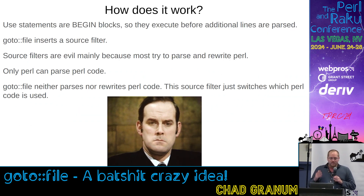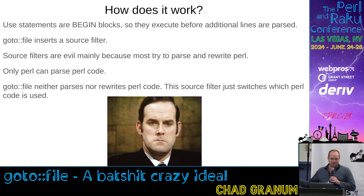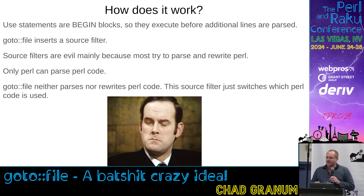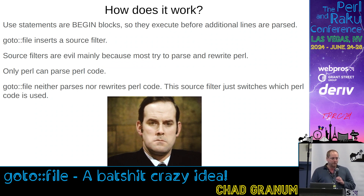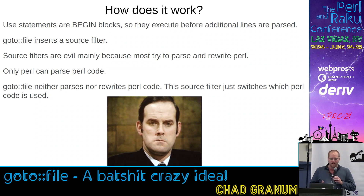So, how does it work? Well, there's a few things you need to know about. You need to know that use statements are essentially begin blocks. You need to know that GoToFile inserts a source filter. Now, source filters are, of course, evil because they try to parse and then rewrite Perl, and only Perl can parse Perl. However, GoToFile's source filter does not parse or rewrite Perl. It just throws away some Perl and pulls another Perl. So, it's not really that evil.